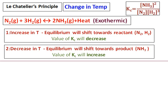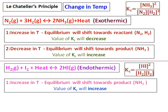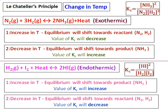Applying the same reasoning to an endothermic reaction — hydrogen plus iodine, where heat is added to the reactant side — any increase in temperature will favor the forward reaction. The equilibrium will shift towards the product, and since more product is formed, the value of Kc will increase.